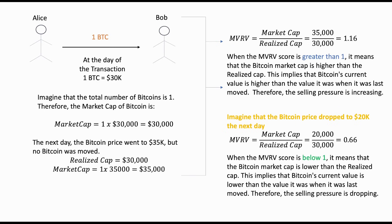We separate the realized cap from the market cap because Alice sent Bitcoin to Bob assuming at the time that one Bitcoin was worth $30K, and Bob accepted it thinking the same thing. However, now that Bitcoin's price has increased, Bob may be tempted to sell. On the other hand, if the Bitcoin price drops below $30K, Bob will likely not feel the urge to sell as he'd be at a loss, and as a result, the selling pressure of Bitcoin is reduced. The MVRV is simply the ratio between the market cap and the realized cap, helping us gauge selling pressure.